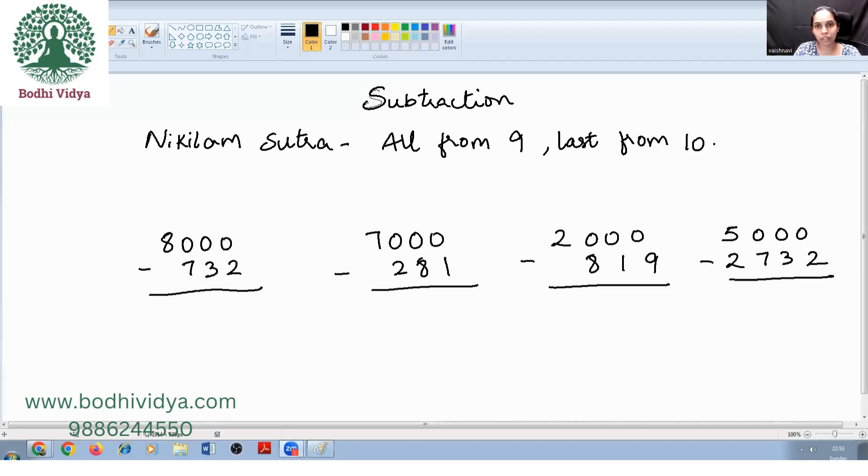So generally, children do this borrowing method. Whenever we are unable to subtract from a number, when the below number is greater than the above number, we tend to borrow and do it.